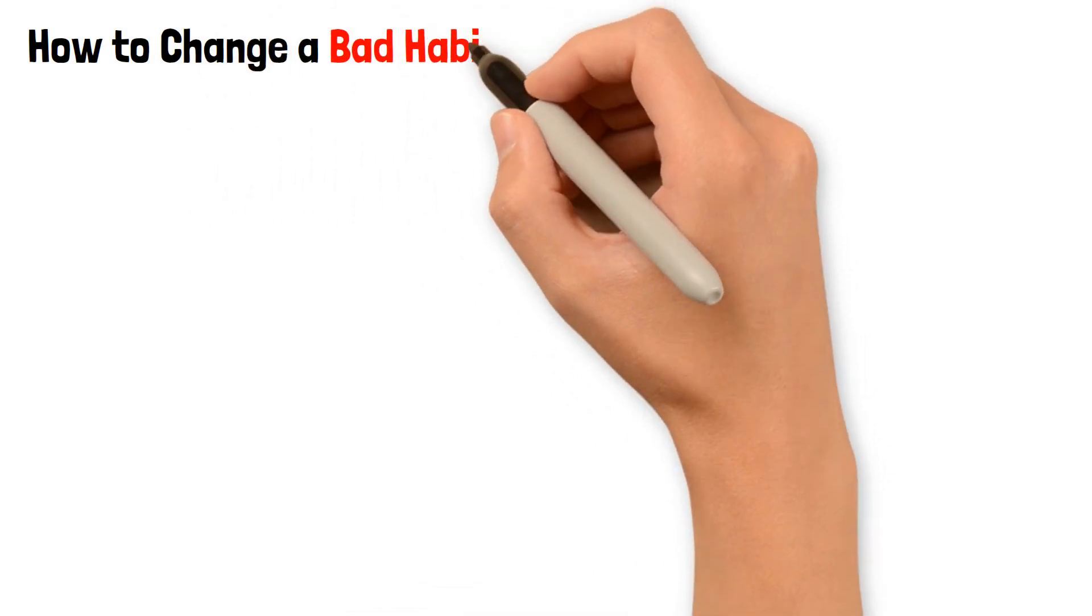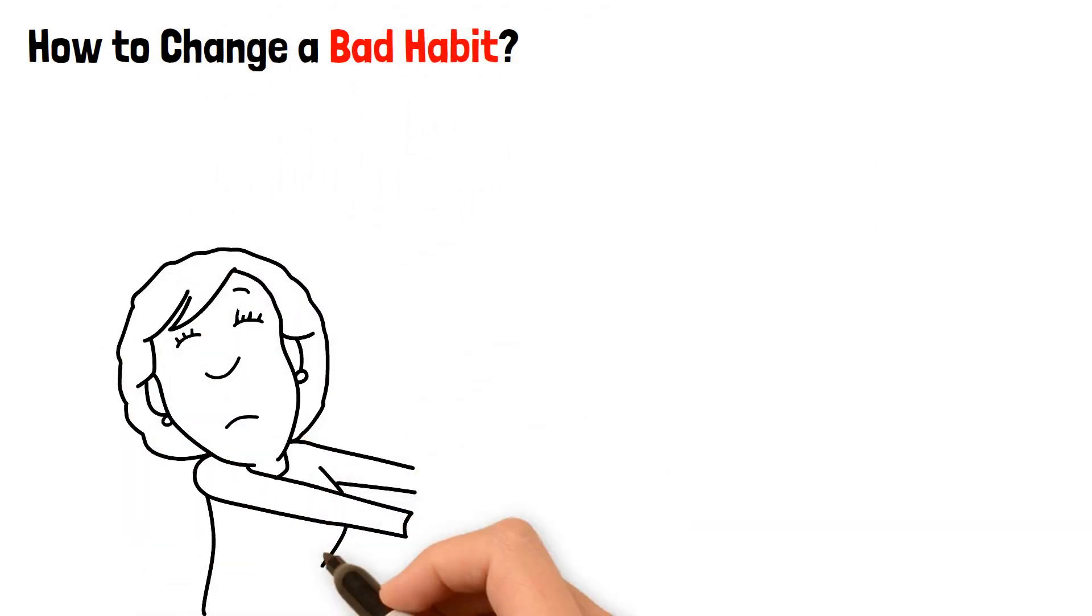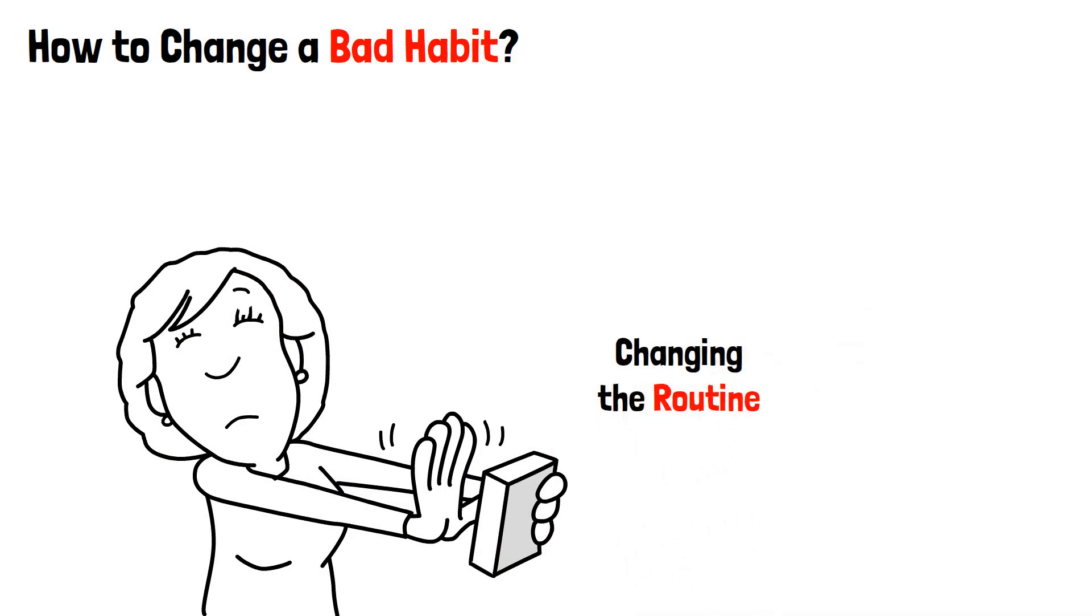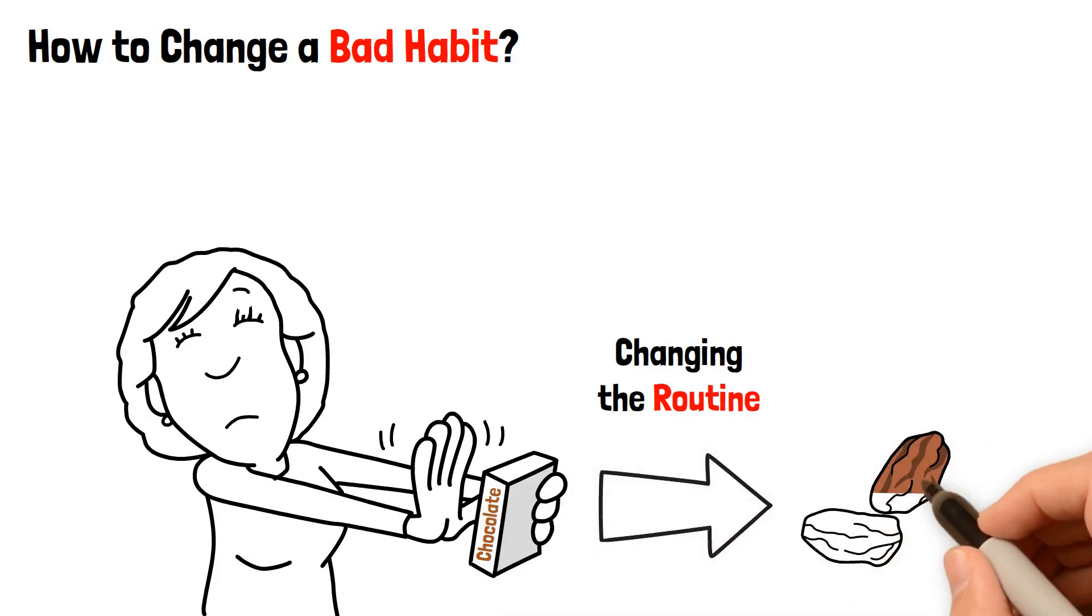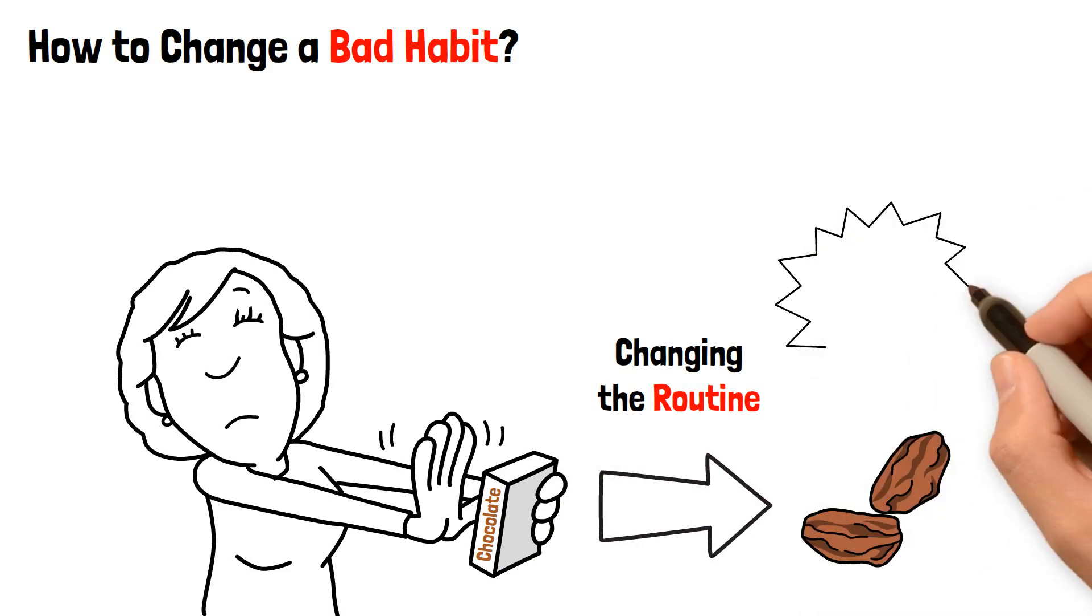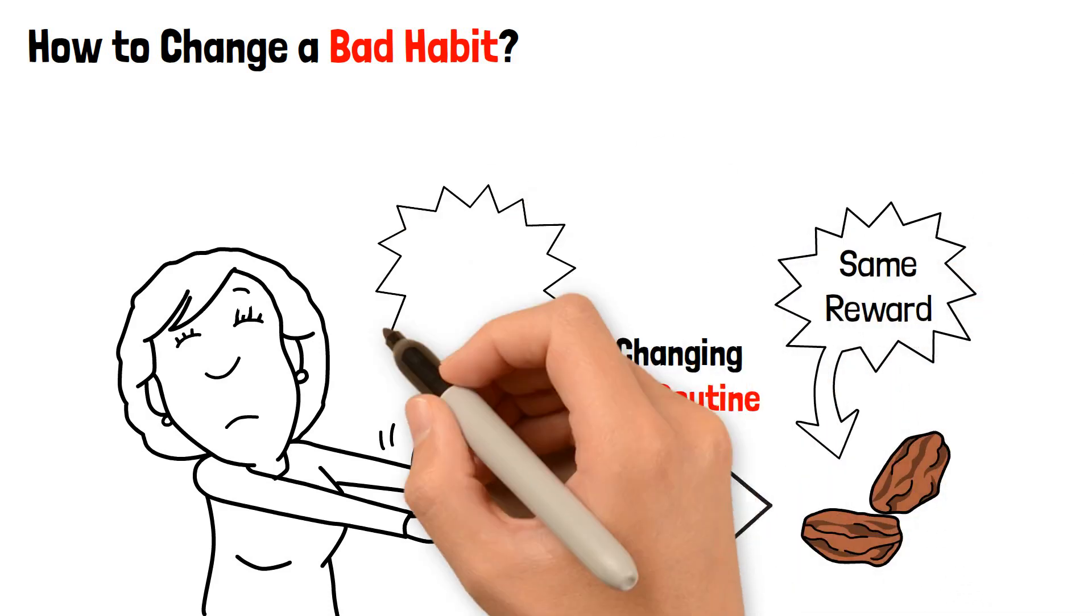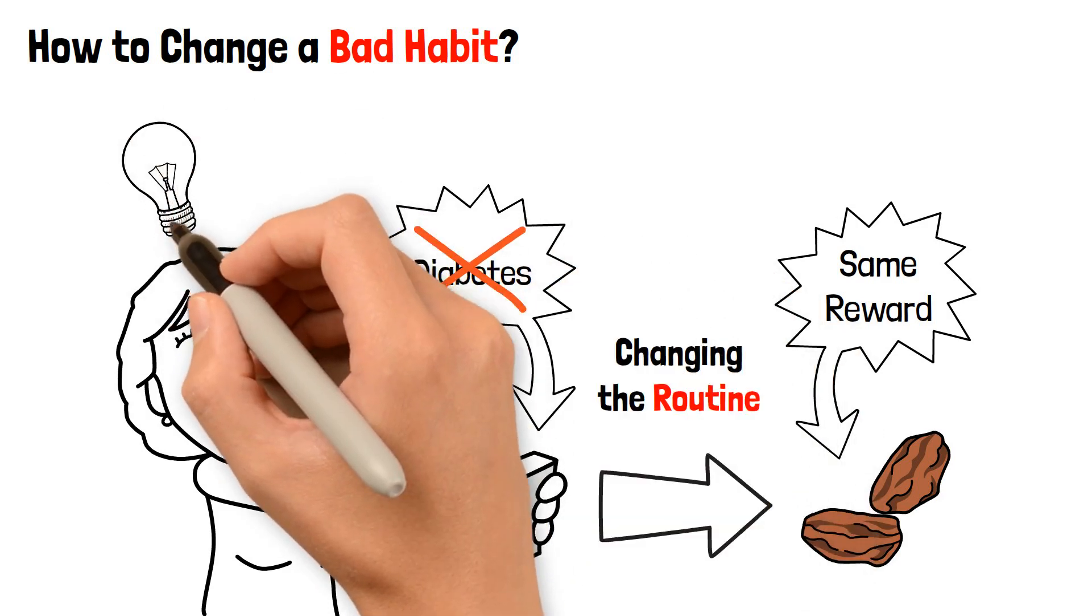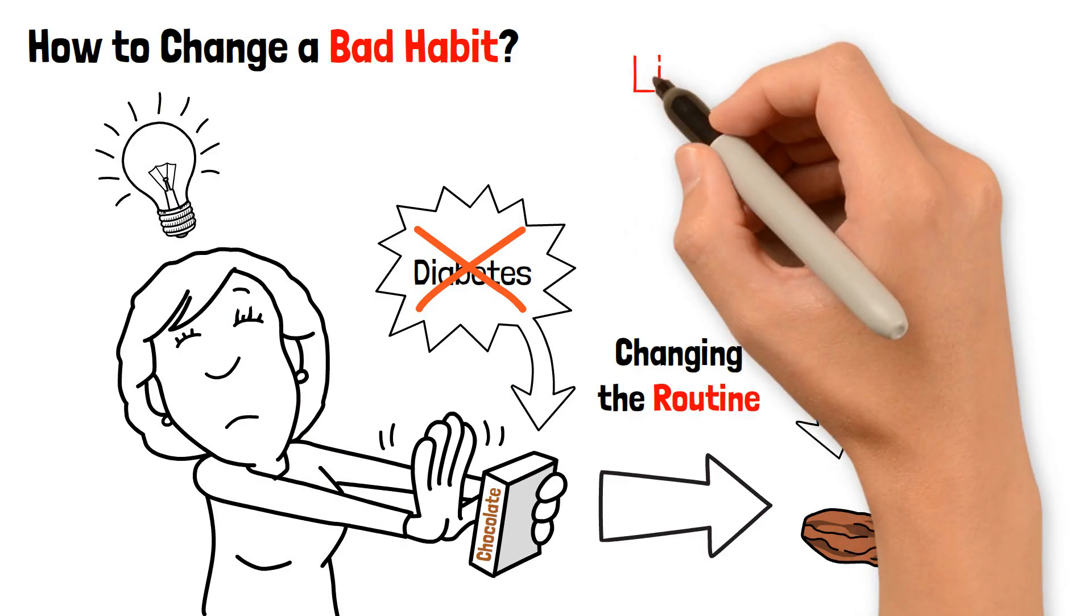How to change a bad habit. The best way to change a bad habit is changing the routine: how you do things to get the reward. For example, if you have a sweet tooth and crave something sweet after dinner, switch from chocolate or candy to something sweet but healthy, such as dates. You get the same reward but without the risk of getting diabetes. The key is observing your cravings and trying to get your reward with less or no harm.